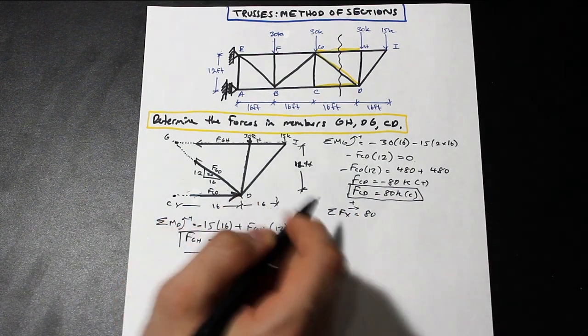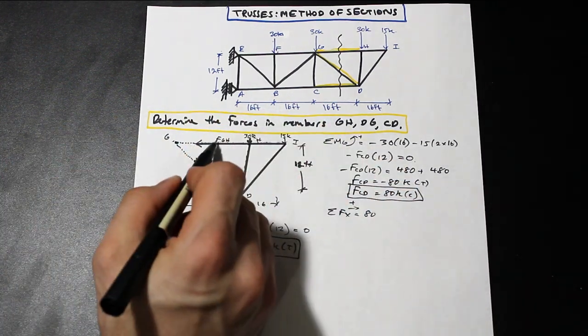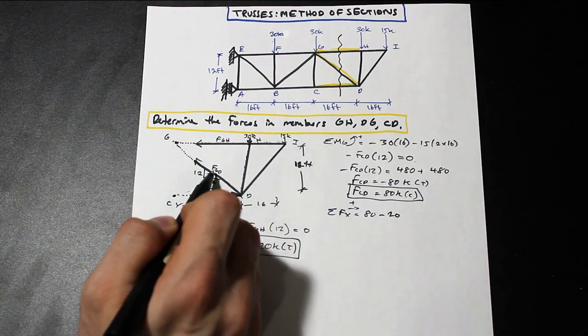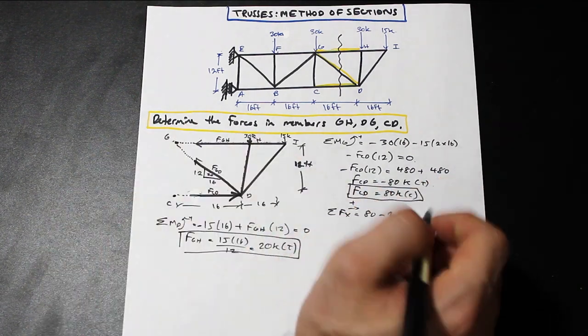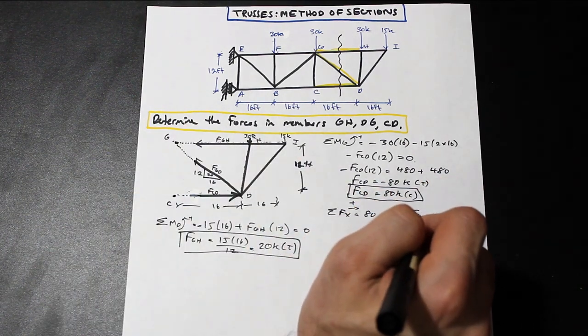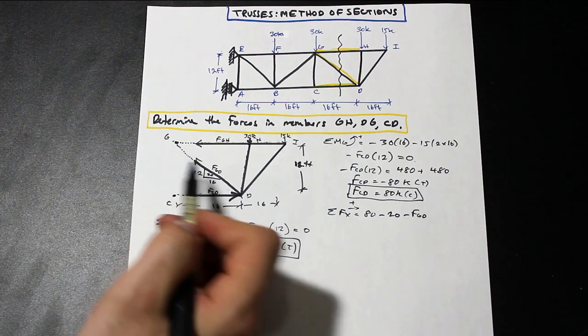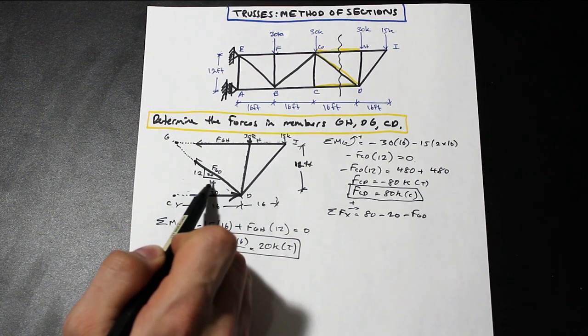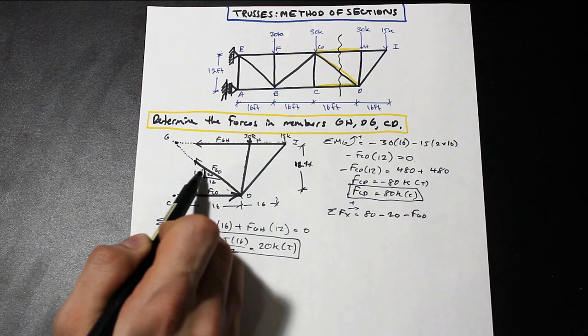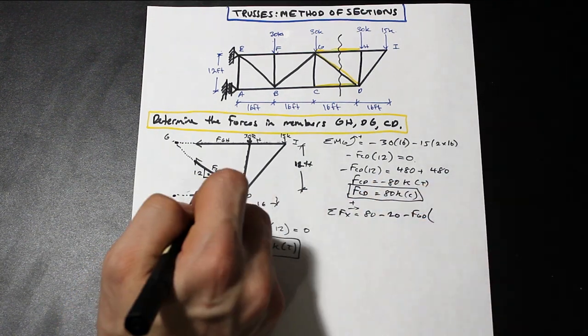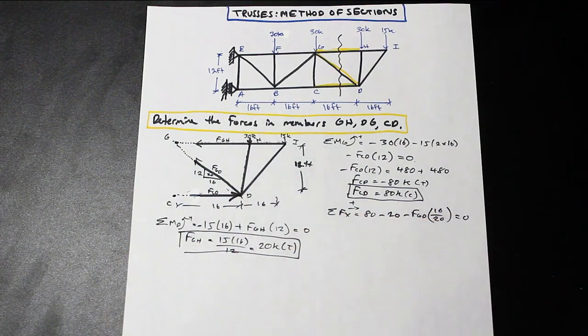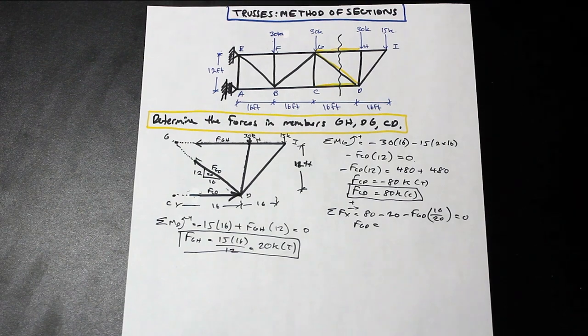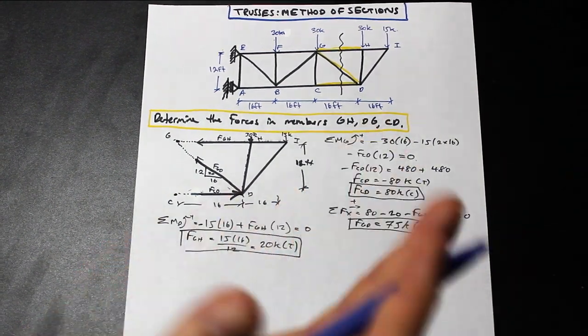That's going to be minus 20. And we have FGD. FGD is in the left direction. That's going to be negative. But as you can see, FGD is on an angle. So we only want the X component of this vector here. So the way we do that is we simply take, we have our triangle here. So we're just going to multiply that by 16 over 20 equal to 0. And that's going to give us an FGD value, 75 kip. And the direction is correct. It is in tension. And that's pretty much it.